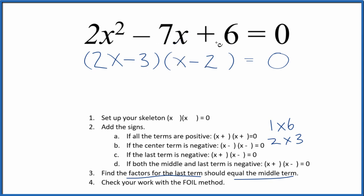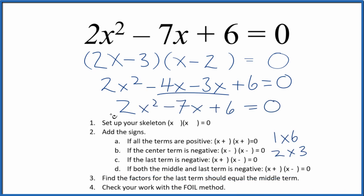But we should check our work with the FOIL method. Multiply the first, outside, inside, and last. When we do that, we can combine these two terms here, and since this is what we started out with, we've correctly factored the equation 2x² - 7x + 6.